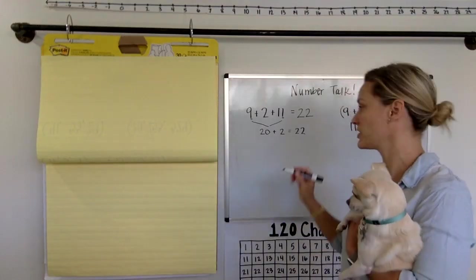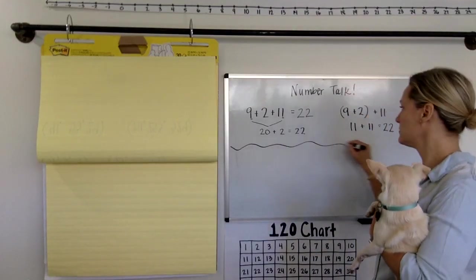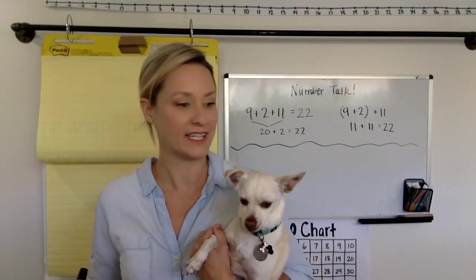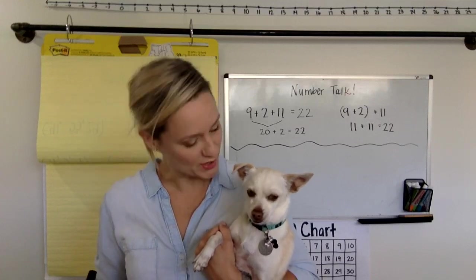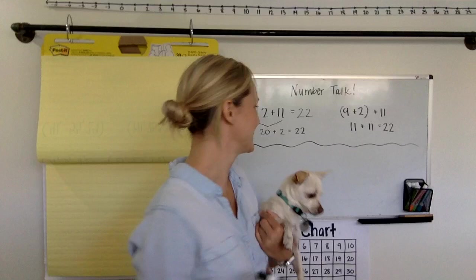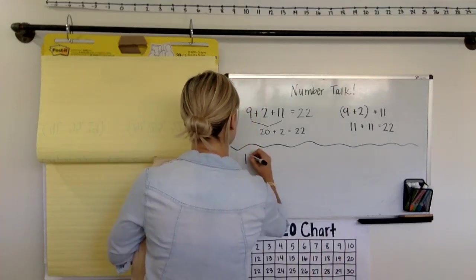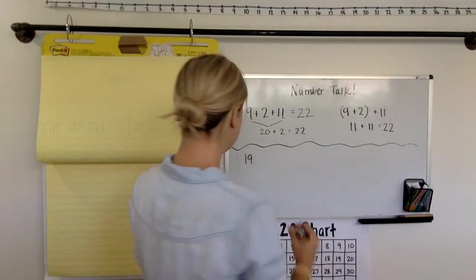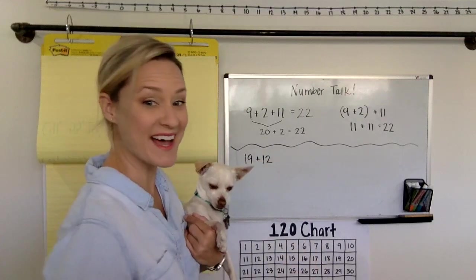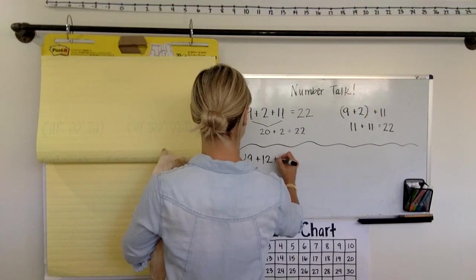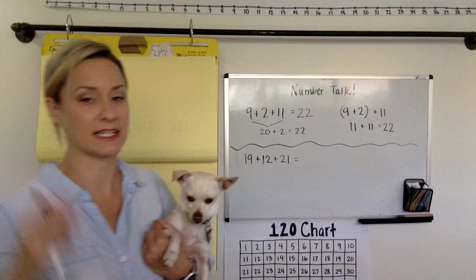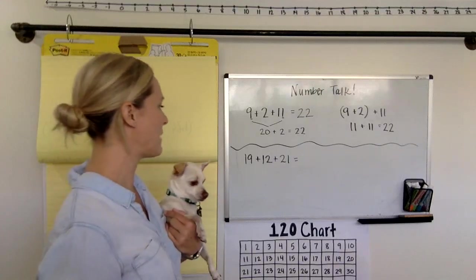Here's your next question. Remember, all mental math, we are finding really good ways to solve in our minds. Here's your next one. You ready? Chip, are you ready? Say yes. I think that was a yes. 19 plus 12 plus 21. That's a big one. Let's take some think time. We're going to think about what that might be.